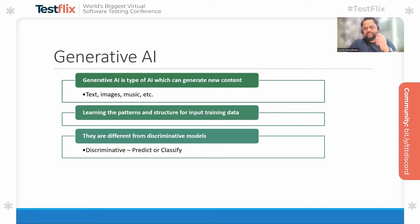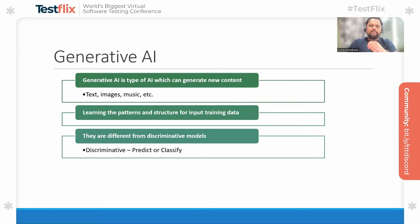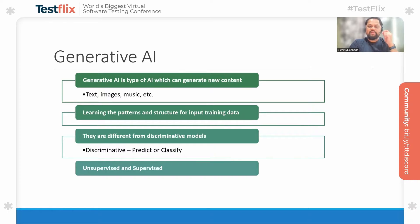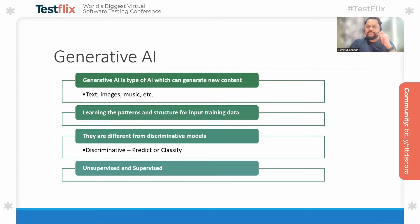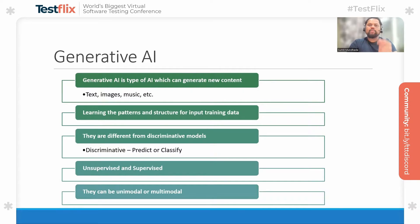Generative AI applications are quite different from discriminative models, where discriminative models try to solve the problem of predictions and classification. On the other hand, generative AI applications try to create content altogether. Generative AI applications are powerful because of their ability to use different training methodologies such as unsupervised learning and semi-supervised learning, which makes them unique. Generative AI applications can be unimodal or multimodal, meaning they can use one input at a time or multiple inputs.